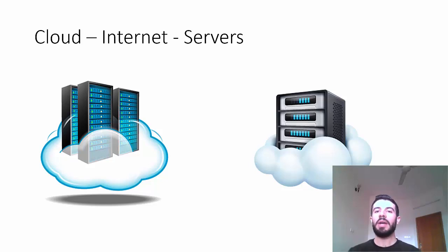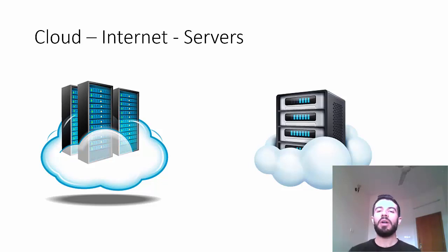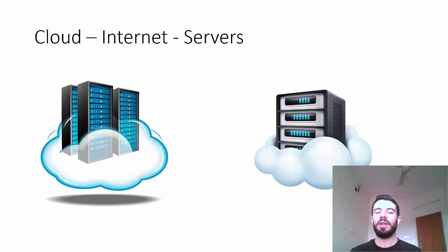So, there is special hardware and also a special type of software. For example, the operating system. In our normal client computers, we have Windows 7, Windows 8, or Windows 10, or maybe Mac or Linux such as Ubuntu. In the server, we have another type of operating system — a special one, like Microsoft Windows Server or Unix, with many distributions of Unix for the server.